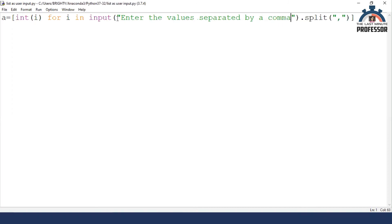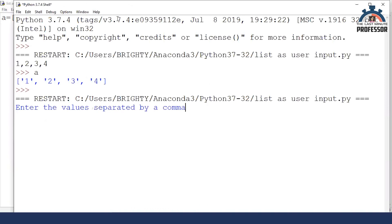I'm saving it and running it. So now it is telling enter the values separated by a comma and I am giving one comma two comma three comma four and I'm pressing enter key. So now if I print and see the value of the list A, it will be one, two, three, four. So that's it.